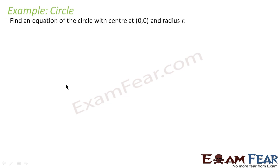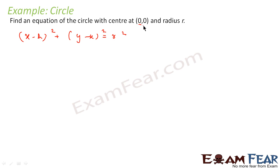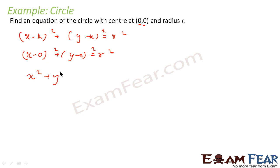Now let's take some examples. The question says: find the equation of circle with center (0, 0) and radius r. We know the formula: (x − h)² + (y − k)² = r². The center is (0, 0), so h = 0 and k = 0. It becomes (x − 0)² + (y − 0)² = r², so the formula is x² + y² = r².